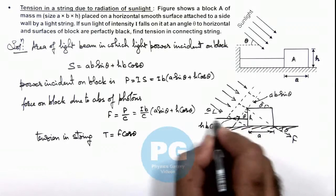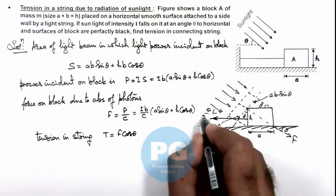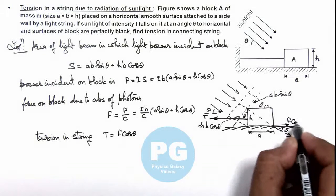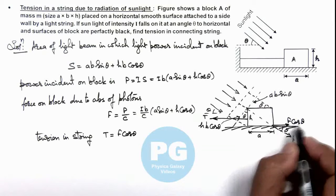Here the connecting string, if tension T is there in it, it is due to the horizontal component of the force which is F cosθ.